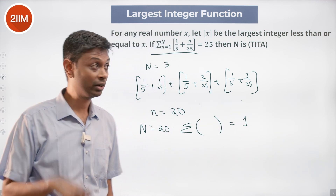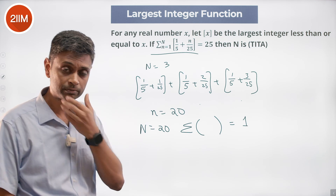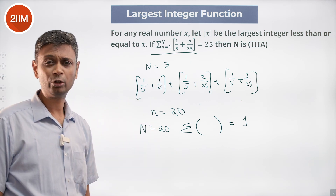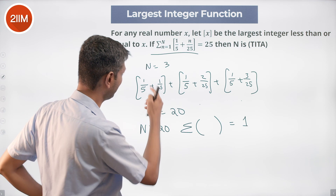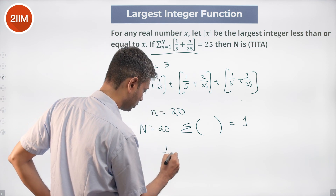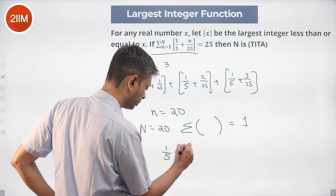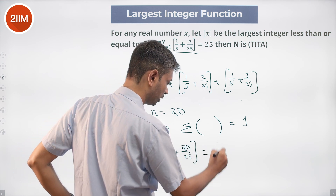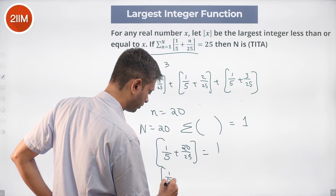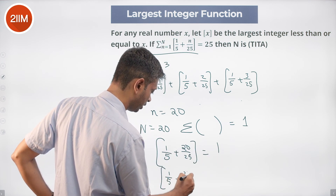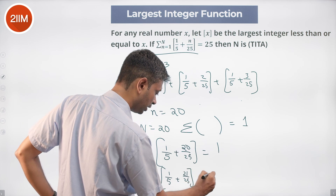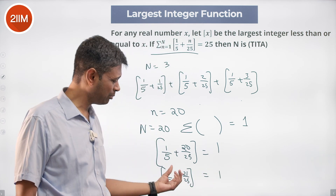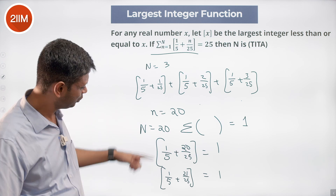That's when it goes to 1. We want the sum to be 25. So N must be more than 20. For n=21, floor(1/5 + 21/25) — this is slightly more than 1, so greatest integer is still 1.